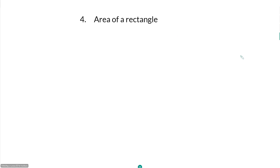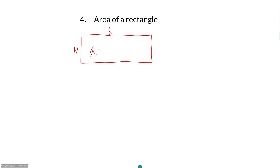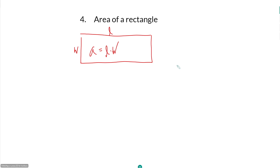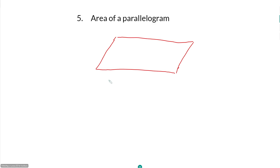Area of a rectangle is just length times width. You can think of that as base times height, because for a rectangle the length is the base and the width is the height since all angles are 90 degrees. For a parallelogram it is still really base times height — but the side of the parallelogram is not the height since it is on a slant. You would have to find the actual perpendicular height.